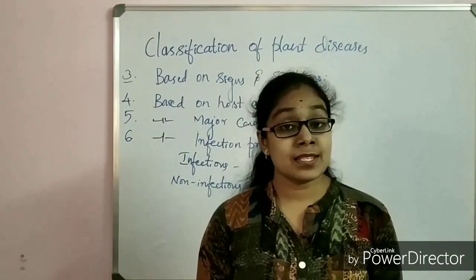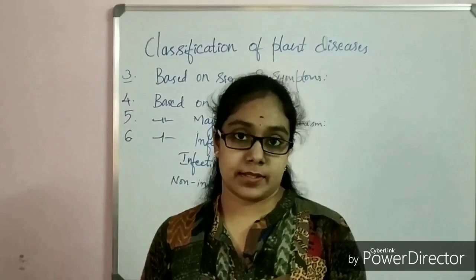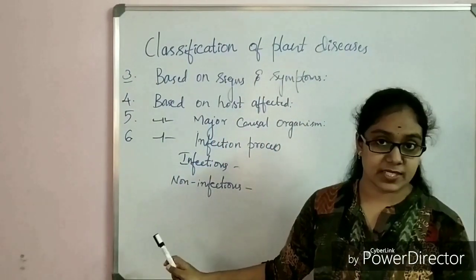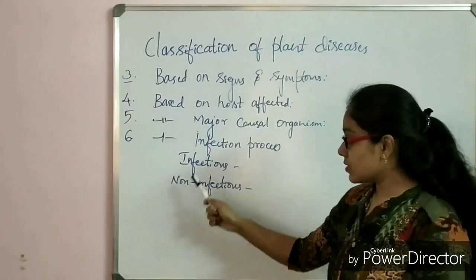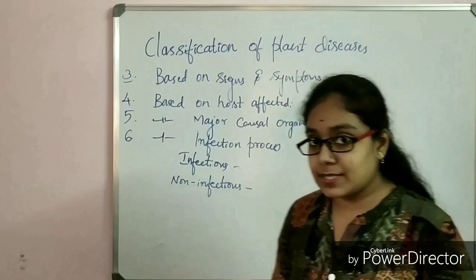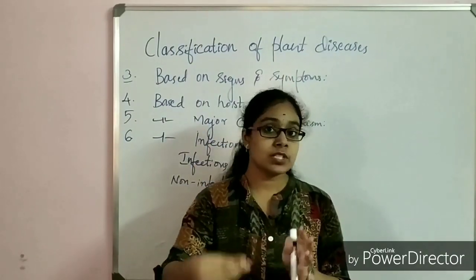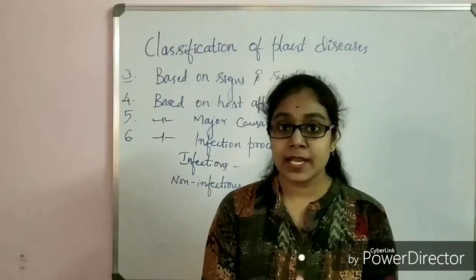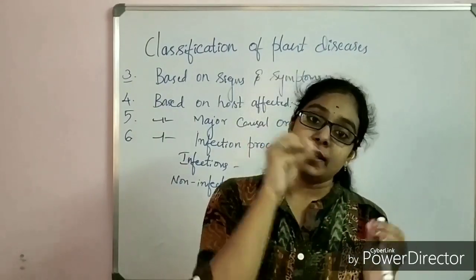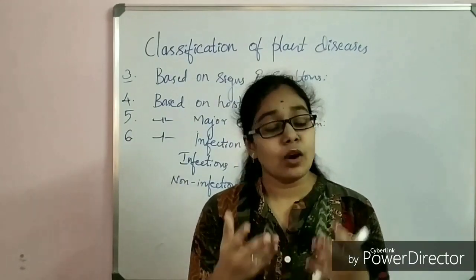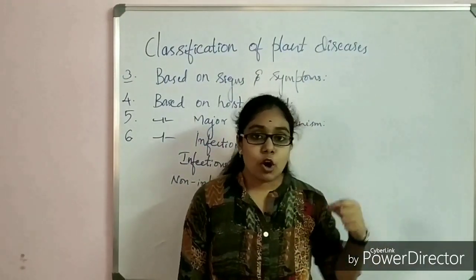Infectious diseases are the type of diseases in which the pathogen gains entry into a healthy plant from a diseased plant — the disease-causing agents are transmitted from diseased plants to healthy plants, and in this way the infection spreads. Non-infectious diseases are diseases which are not caused by the transmission of pathogens from diseased plants into healthy plants; the pathogen cannot transmit from diseased plants to healthy plants.